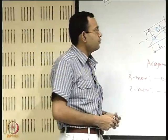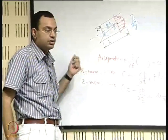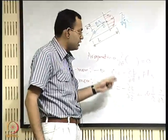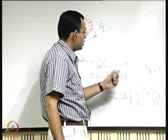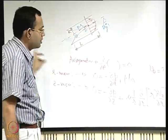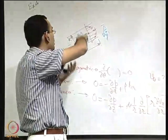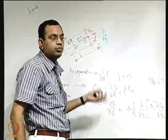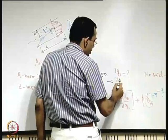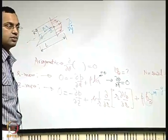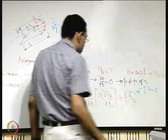We continue with the example of fully developed flow through a circular pipe. In the last class we arrived at the simplified forms of the governing equations. Considering the r-momentum equation, Br is the body force component in the radial direction. Unless the pipe radius is very large, this effect is negligible, so the pressure gradient along r equals zero, meaning p is not a function of r — only a function of z.